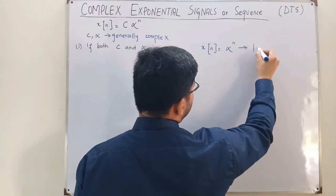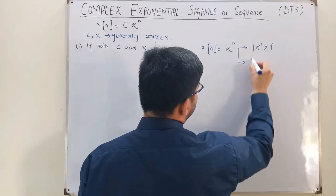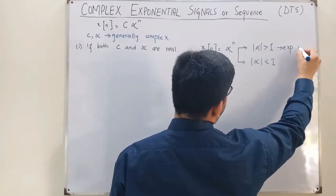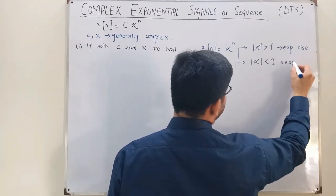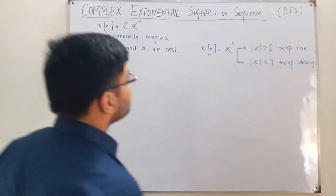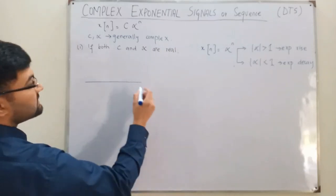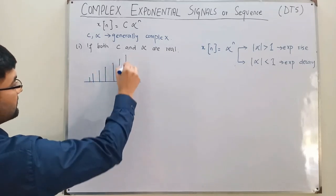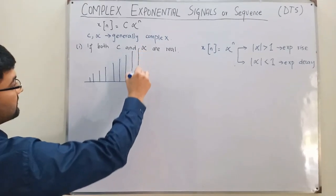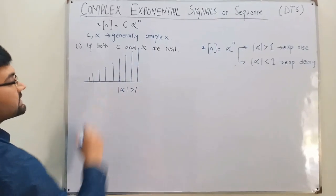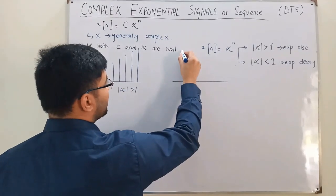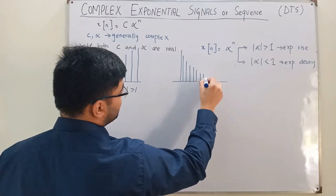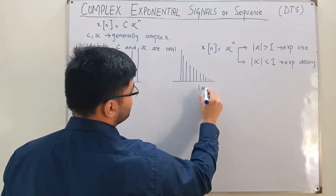Depending on alpha, we have two types. If the magnitude of alpha is greater than one, we have an exponential rise. If the magnitude of alpha is less than one, we have an exponential decay. Let me draw both of these cases here.